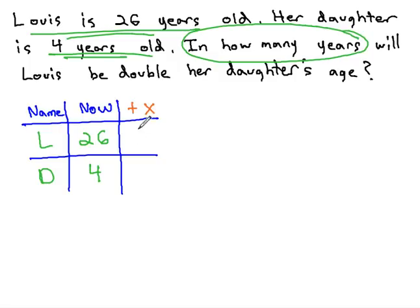We can proceed in much the same way by taking Lois's age of 26 and adding x, or some unknown amount of time. Same for the daughter. We will add x, or some unknown amount of time.